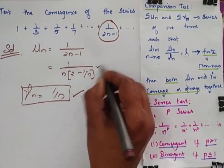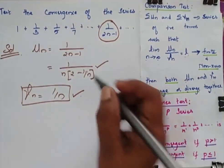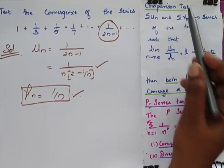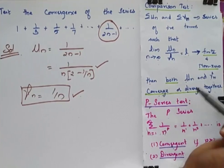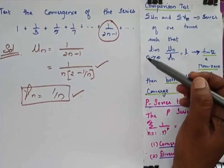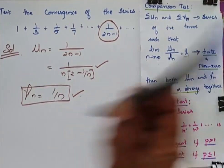So now I have my Un, I have my Vn. So I am going for comparison test to check out whether it is converge or diverge. So for that I have to find limit n tends to infinity of Un by Vn.